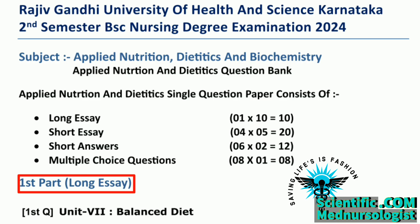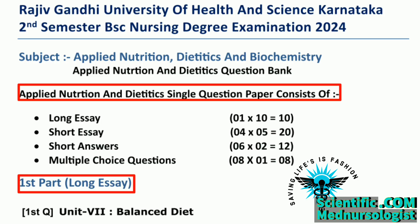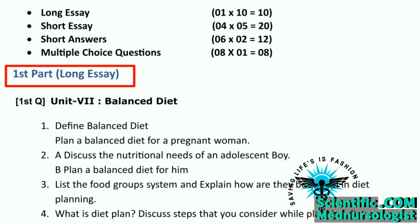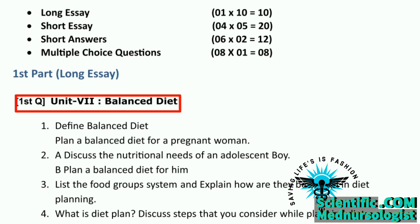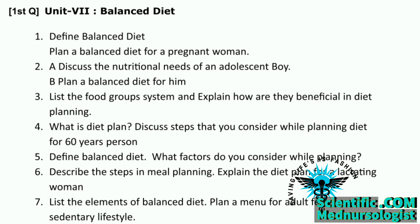Let's start from the long essay part. Let's see from which units the 10 marks questions come, and how many 10 marks questions may come from the 8 units of the syllabus of applied nutrition and dietetics subject. Our long essay part consists of mainly one standard question based on priority and possibilities of repeating. Our first standard question is Unit 7, that is Balanced Diet.